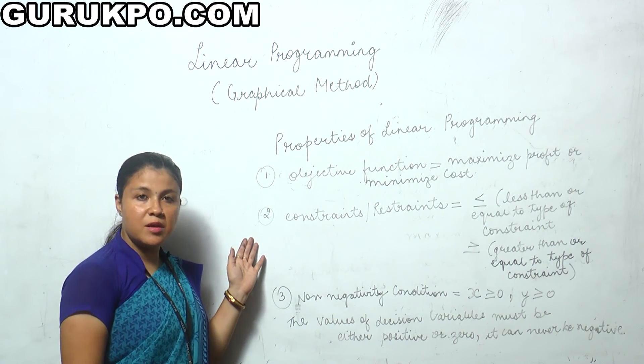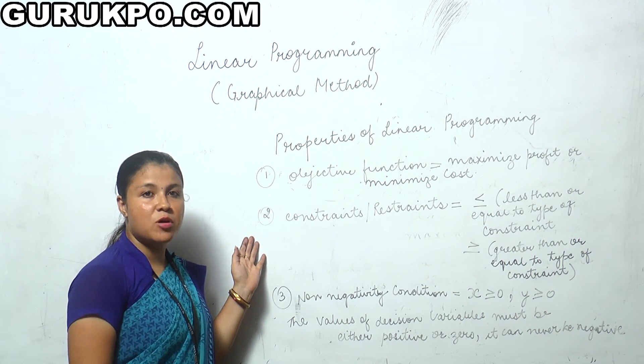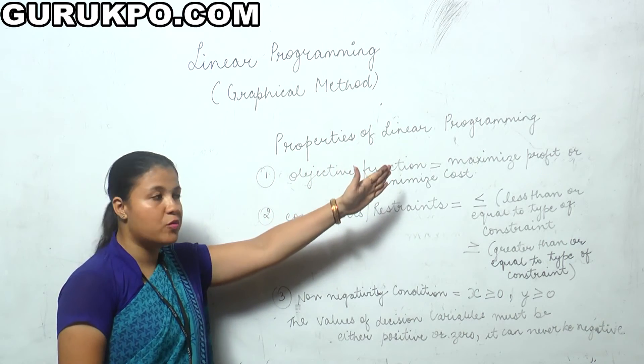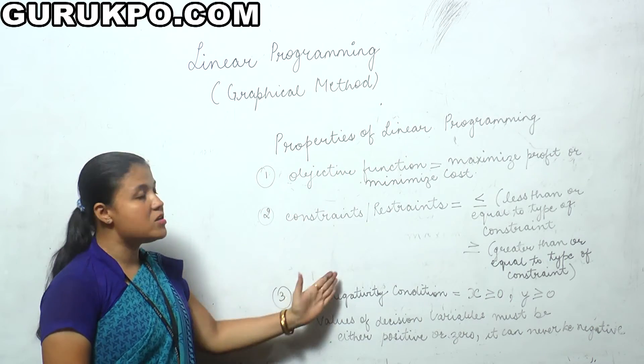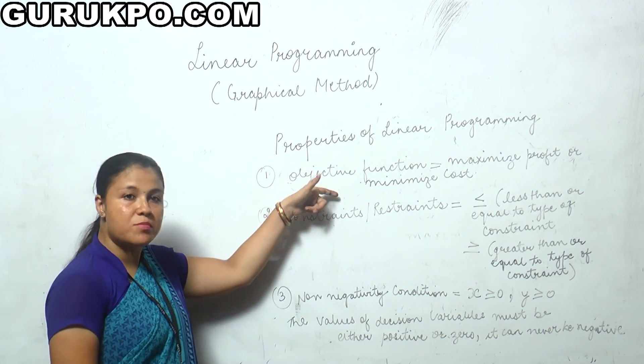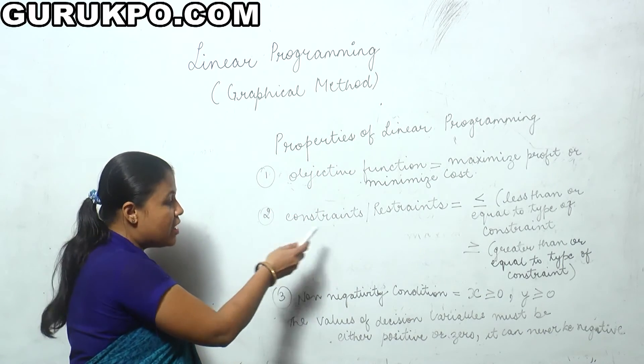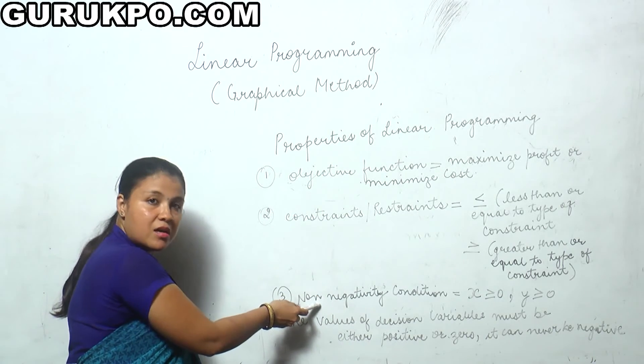Now that we have understood what linear programming is, let's move to the properties of linear programming. There are three properties: first is objective function, second is constraint and restraint, and third is non-negativity condition.